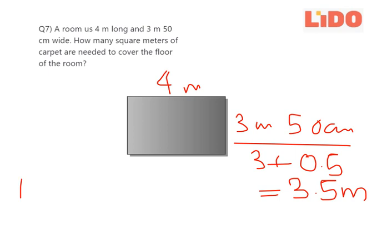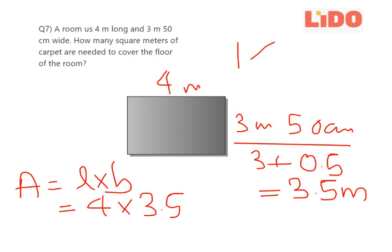Now, the area of a rectangle is equal to length times breadth, which in this case is 4 times 3.5. Therefore, the area will be equal to 4 times 3.5, which equals 14 square meters.